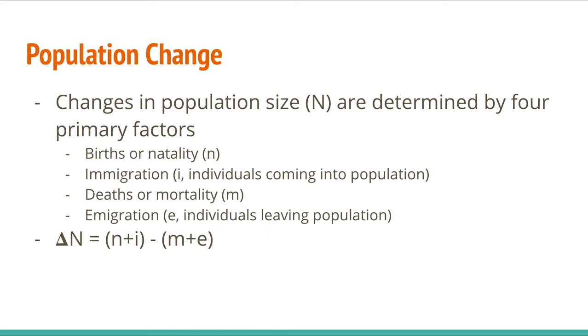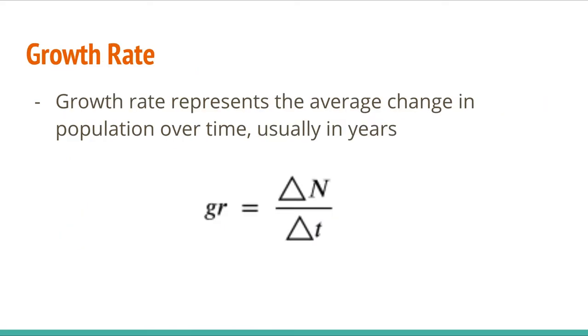Once we know what delta N is, we can do some other calculations that are pretty useful. One of them is growth rate. Growth rate's variable is GR, and this represents growth over time. So how much is the population growing typically each year?